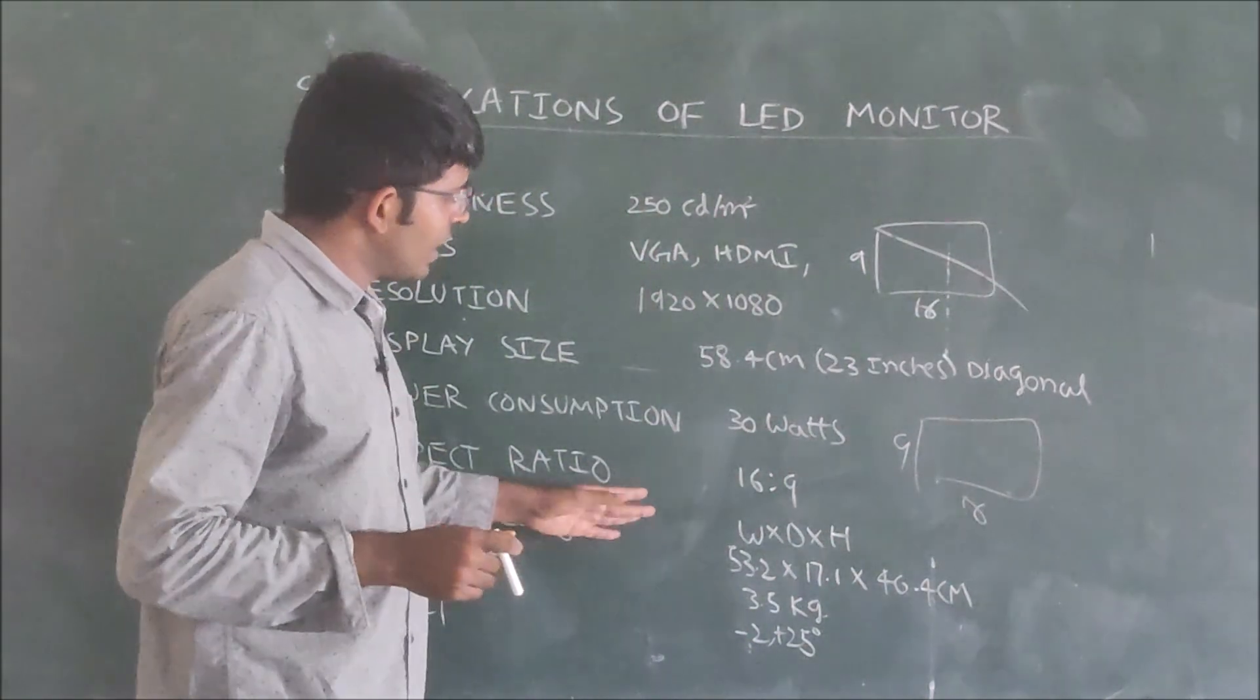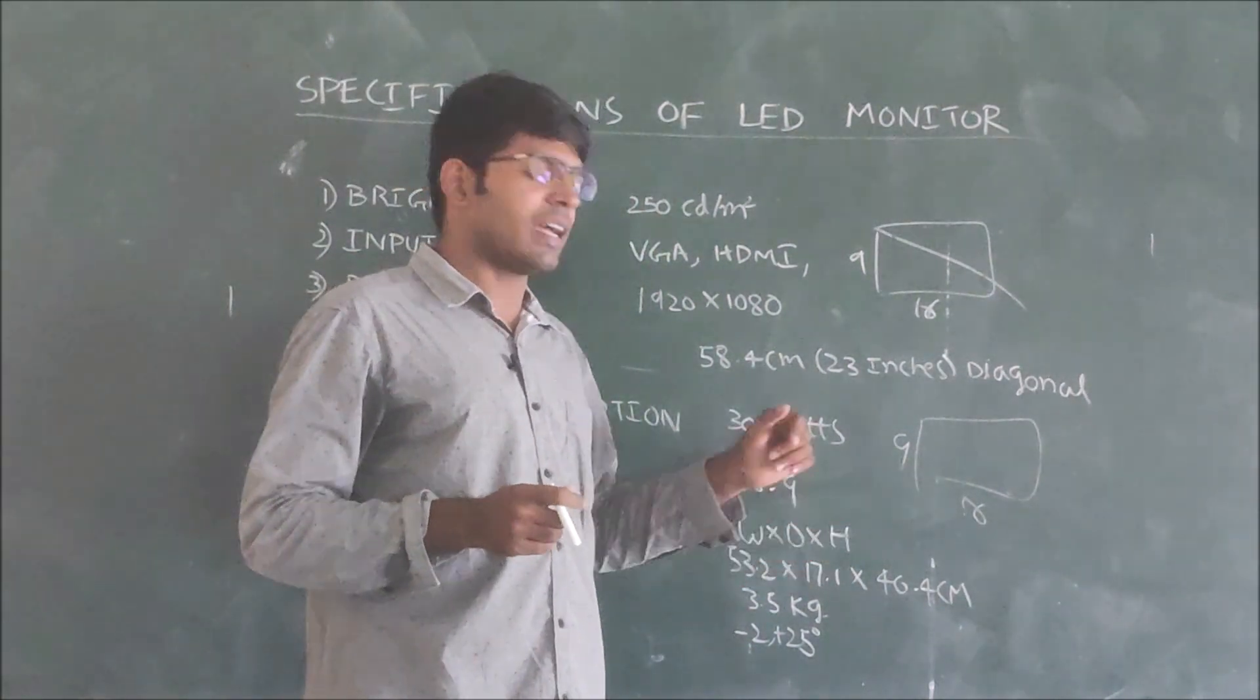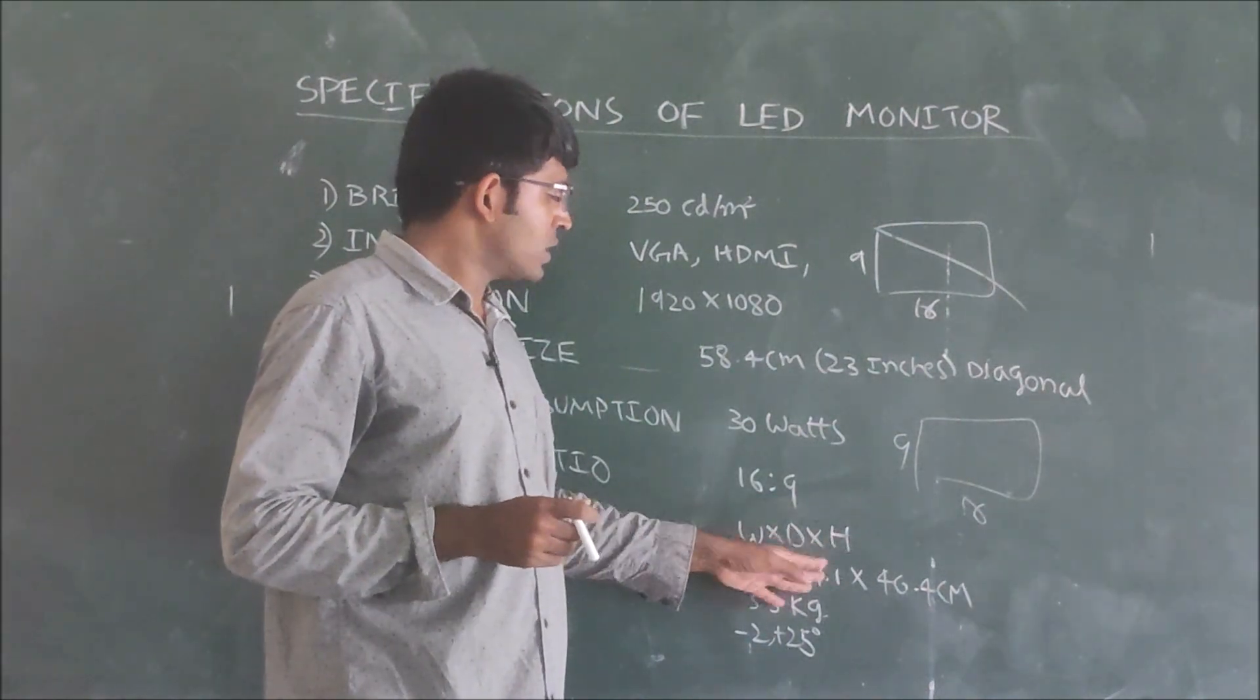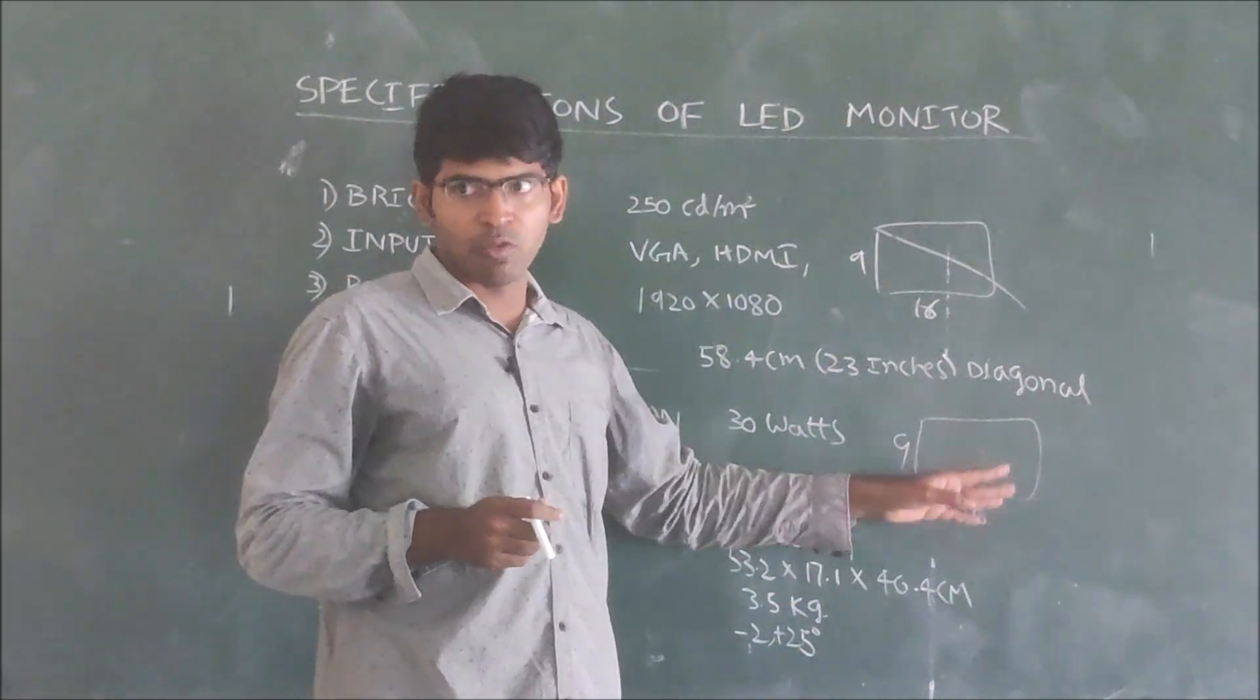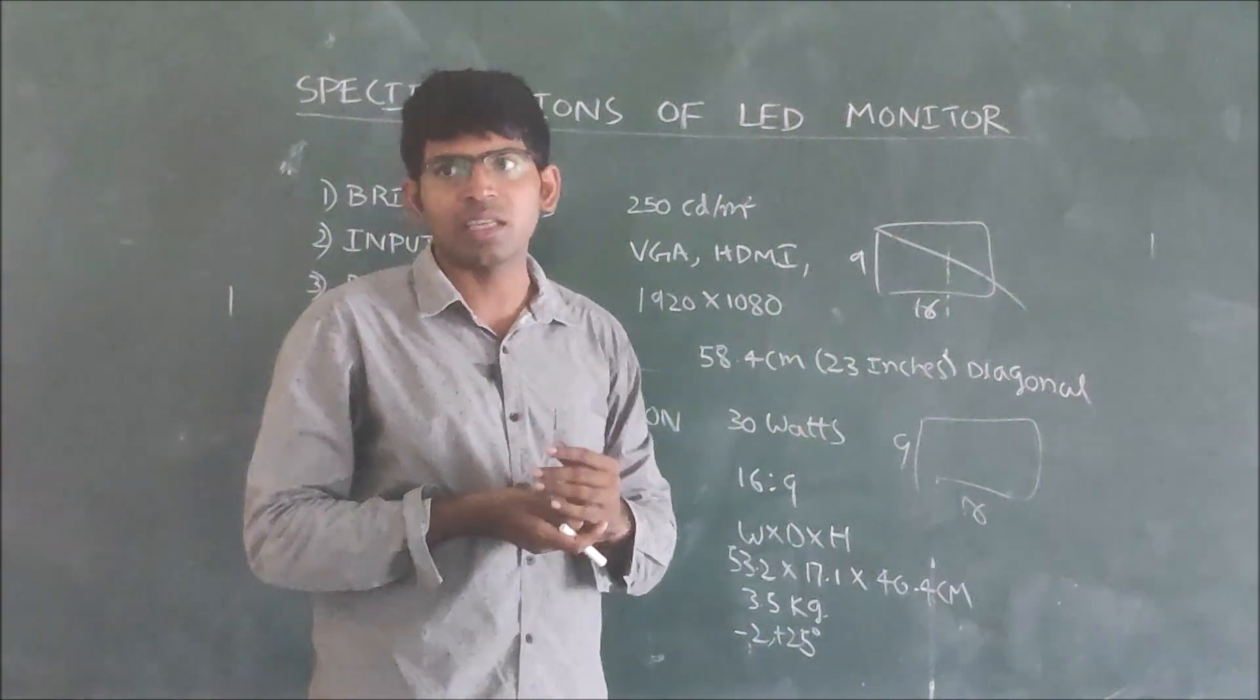Next one is dimensions - here the length and width and height: 53.2, 17.1, 40.4 centimeters for 23 inches LED monitor.